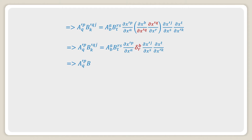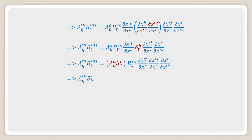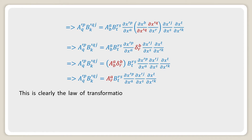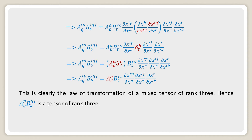In the next step we can combine the two terms a_ab with Kronecker delta delta_br, from which we will get only a_ar, and the remaining terms will remain the same. This is clearly the law of transformation of a mixed tensor of rank 3. Hence a_pq b_qjk is a tensor of rank 3. This proves our theorem.